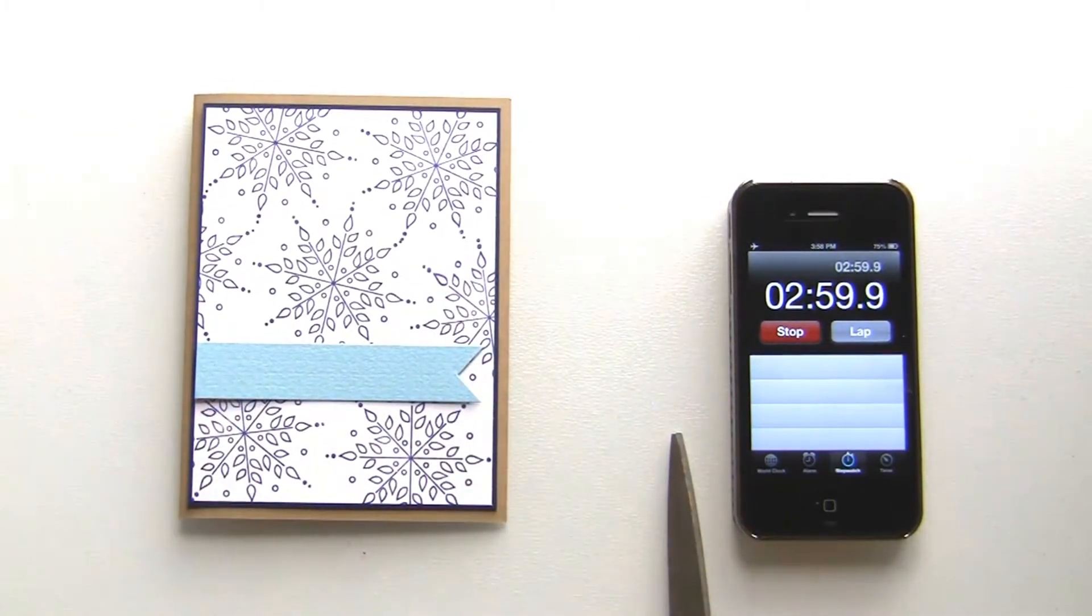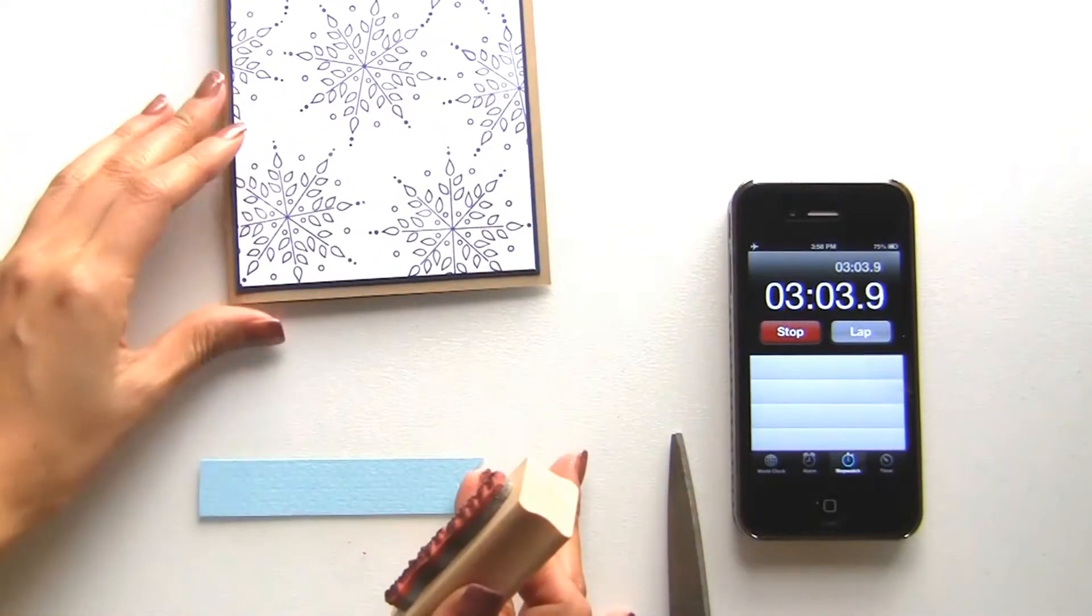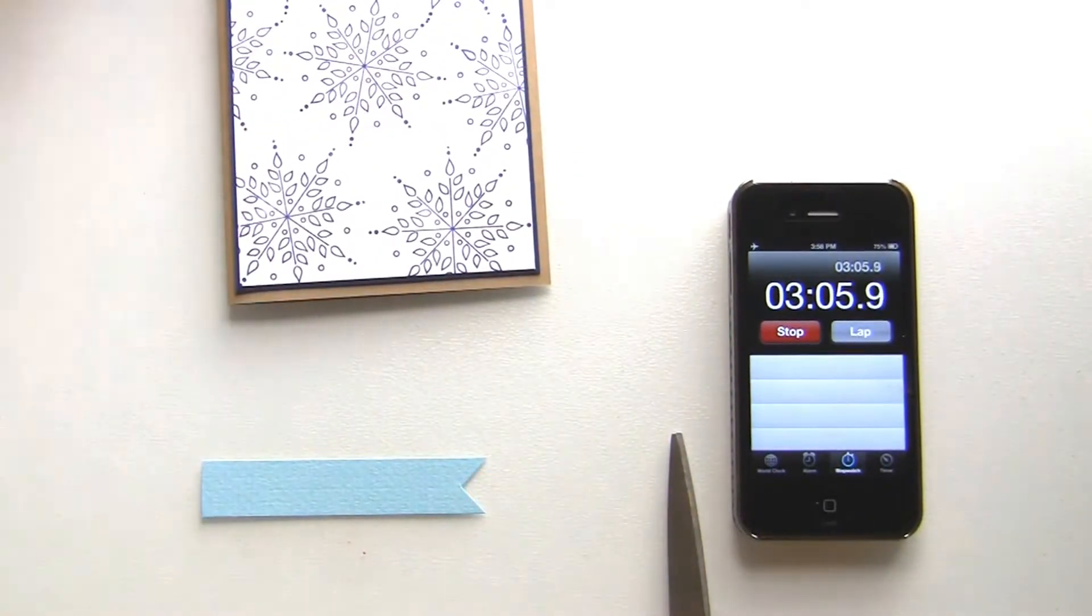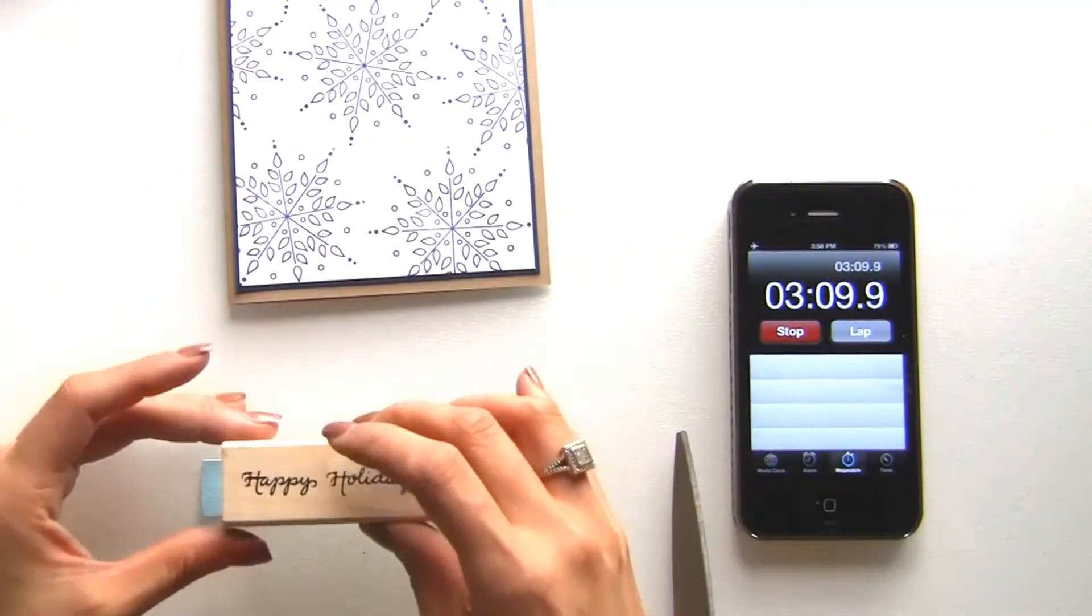So I'll do that and then I'm just using my fingernail to make a mark and cutting that right there. Okay perfect and then now I'm just going to be stamping my sentiment. So I'm going to be using the same blue ink that I was using earlier and I'm using the F164 Happy Holidays.